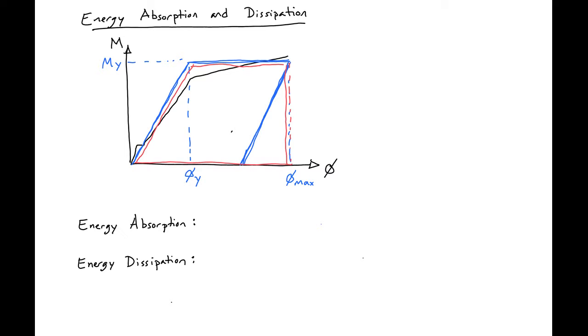So if we were to calculate the actual energy absorption we need to find the area. So we would have the area of our first rectangle here to the right and this triangle section here. So we would have our energy absorption equal to My times (phi_max minus phi_y) plus My times phi_y over 2.